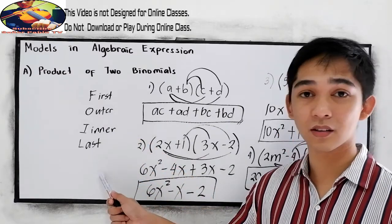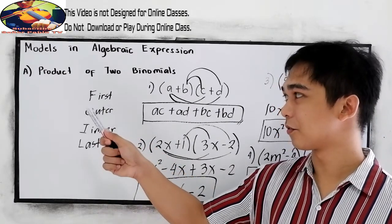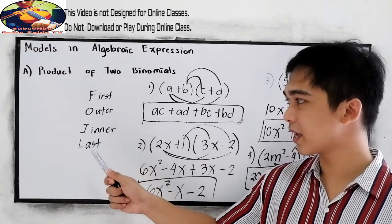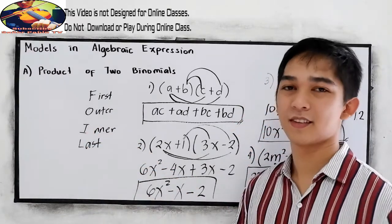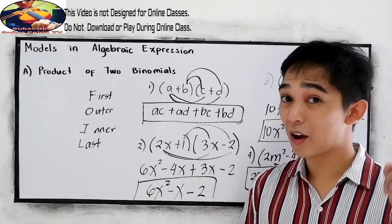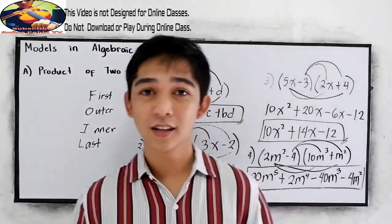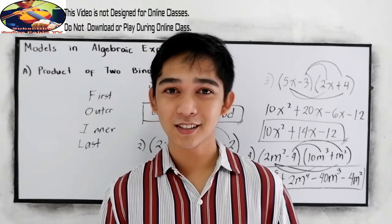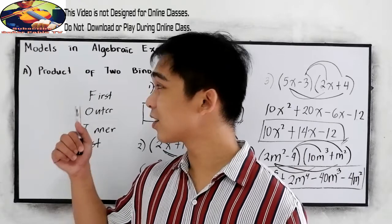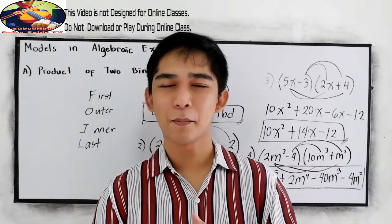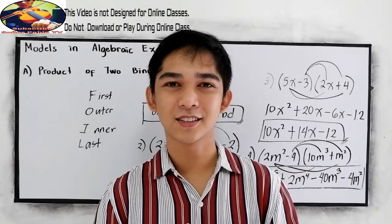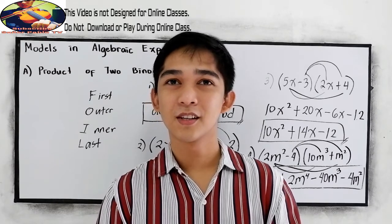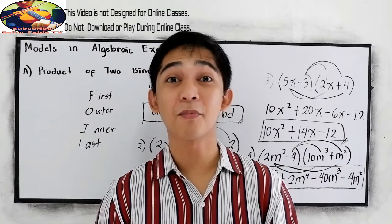That's how to do the product of two binomials. Remember, we have the FOIL method: the First terms, the Outer terms, the Inner terms, and the Last terms. Now you're ready to answer your modules. Thank you for watching Senior Pablo TV. See you in our next lesson, which will be the product of the square of binomials.